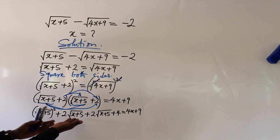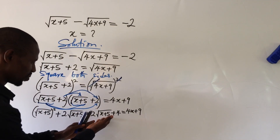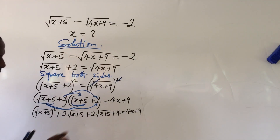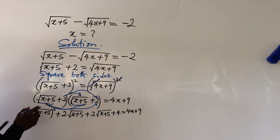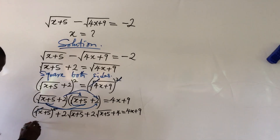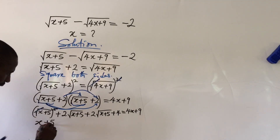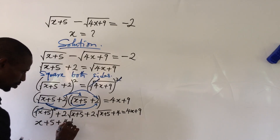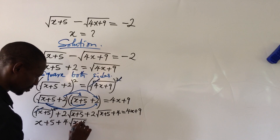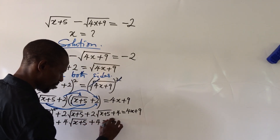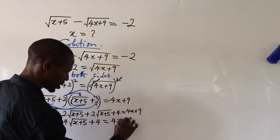The two middle terms are the same — both are 2 times square root of (x + 5) — so their coefficients add to 4. The squared radical cancels the square sign, leaving x + 5. So we now have: x + 5 plus 4 times square root of (x + 5) plus 4, equal to 4x + 9.